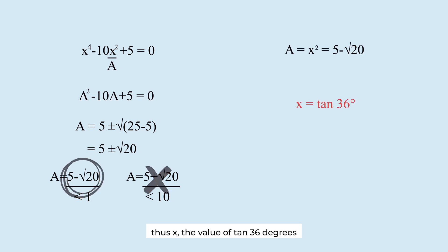Thus, x, the value of tangent 36 degrees, is one of these two values. Since x must be greater than 0, x is this value. This is the value of tangent 36 degrees.